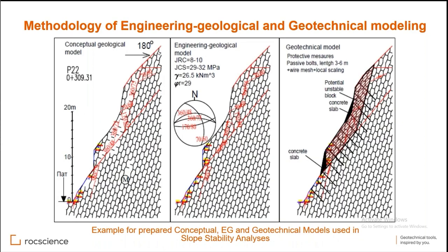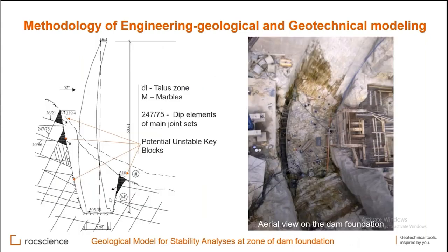Another model was used for stability analysis of the access road slopes — one of the very high ones, more than 35 meters total. The Eurocode methodology was applied: preparation of a conceptual geological model for the slope, then an engineering geological model with values of parameters along joints, then a geotechnical model with a designed support system, analyzed with RockScience software. Similarly, for the dam foundation area, joint sets were plotted on profiles to divide potential stable key blocks needing analysis and support. An aerial photograph shows the beautiful dam foundation area.